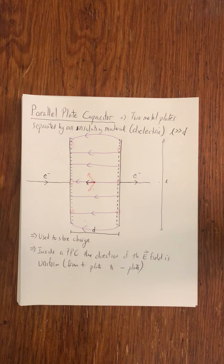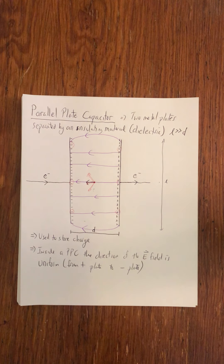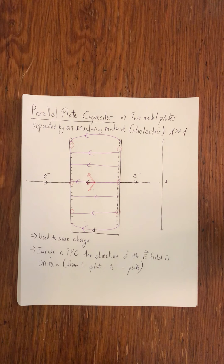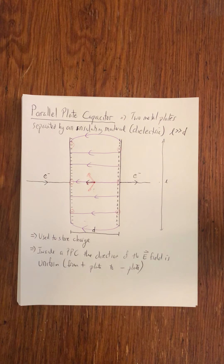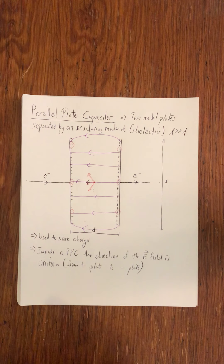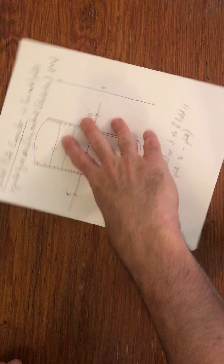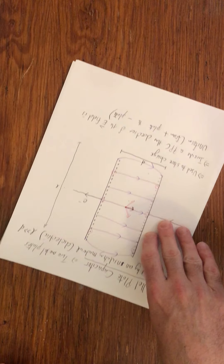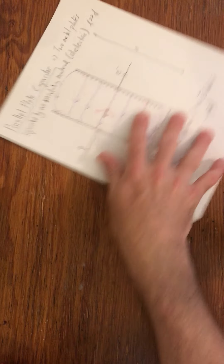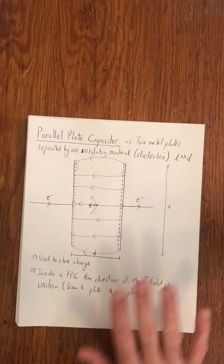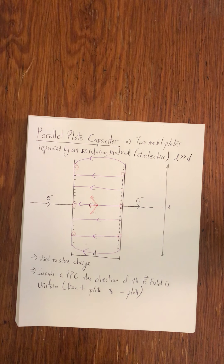In all the other fields we looked at, it wasn't uniform - depending on where you were with respect to the other charges, you can get pushed in all sorts of different directions. Here, in this particular parallel plate capacitor, if I'm a positive charge I will get pushed to the left; if I'm a negative charge I will get pushed to the right. That's how this functions. I could draw this parallel plate capacitor in all sorts of different orientations, but that's what the electric field looks like.